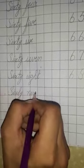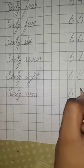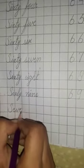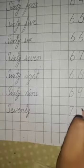N, I, N, E, nine. Sixty-nine. S, E, V, E, N, T, Y, seventy. Seven, zero, seventy.